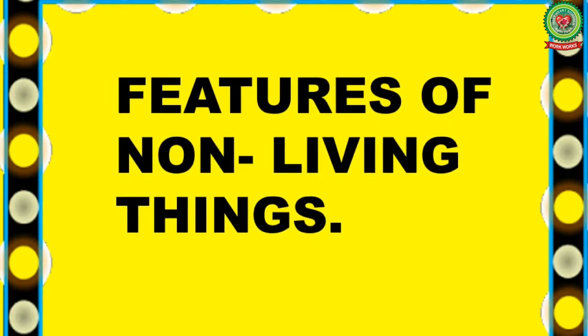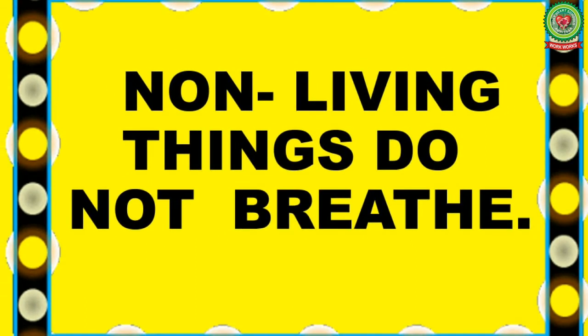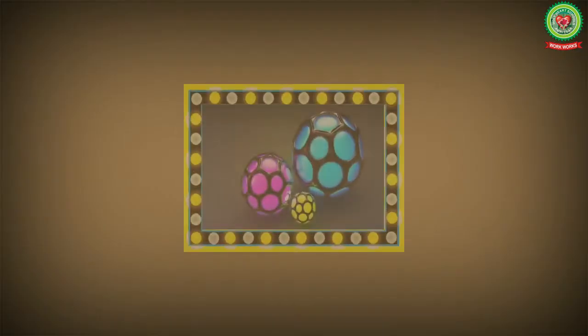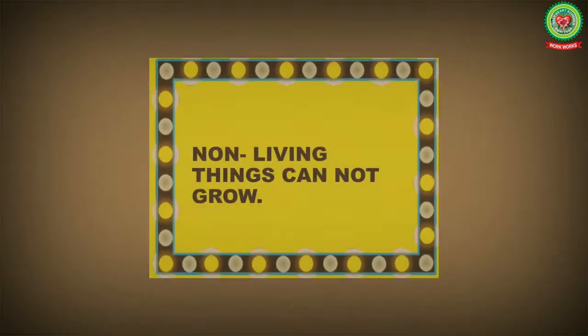The first feature of non-living things is they do not breathe. In this picture you can see some balls. Though these balls have air in them, they do not breathe because balls are non-living things — they do not inhale oxygen and exhale carbon dioxide. This shows non-living things do not breathe.